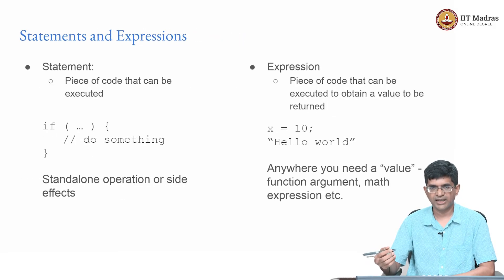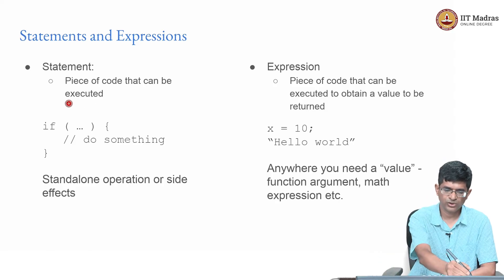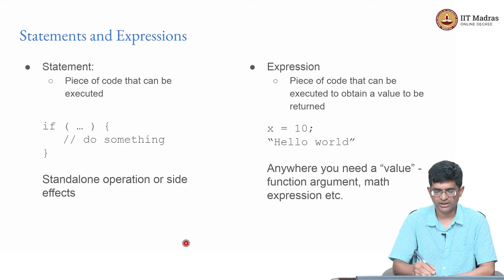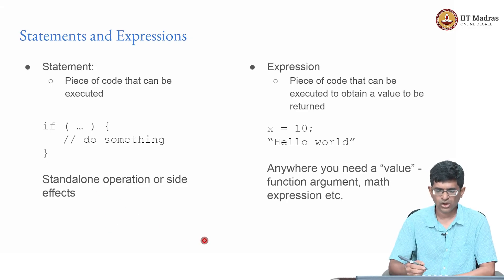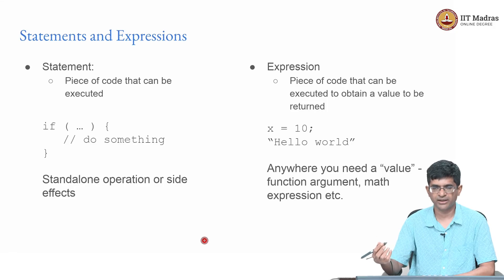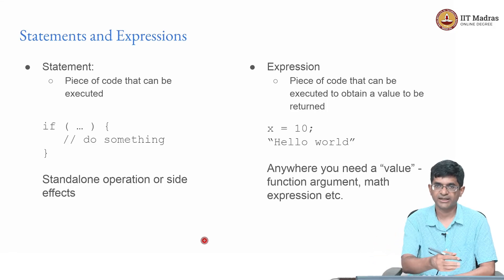In terms of the structure of the language one thing to keep in mind is that it can be broadly looked at in terms of statements and expressions. A statement is a piece of code that can be executed. An example is if something do something and that happens within the curly brackets. It could either be a standalone operation or it could have certain side effects. By side effect what I mean is maybe you could have a console dot log which basically causes something to get printed in the console but does not directly affect any of the variables or the data present inside the program.